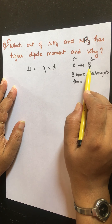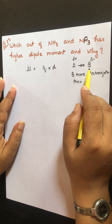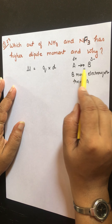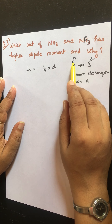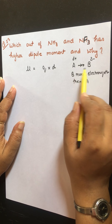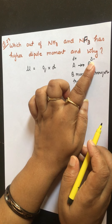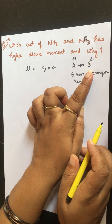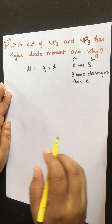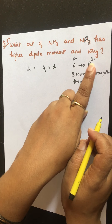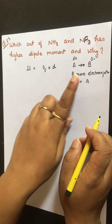If we consider atoms A and B with covalent bonding, and B is more electronegative than A, then the pair of electrons will shift towards B. B will acquire a partial negative charge and A a partial positive charge. This charge separation arises, and dipole moment is the charge separation multiplied by the distance between atoms A and B.